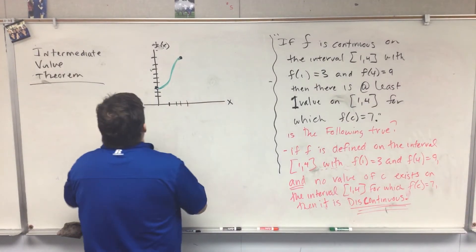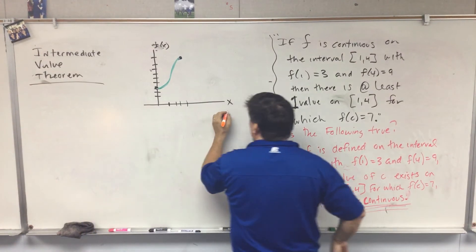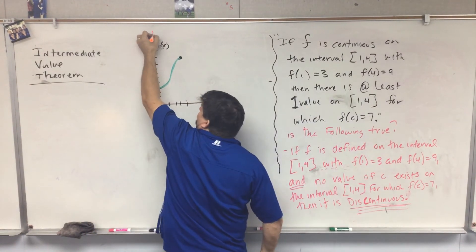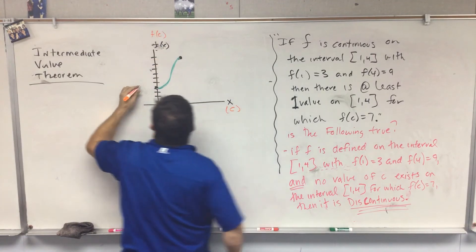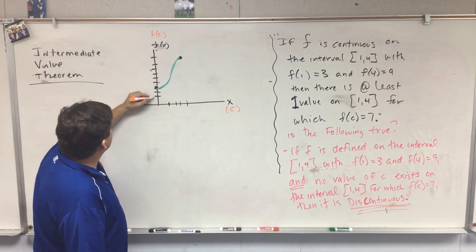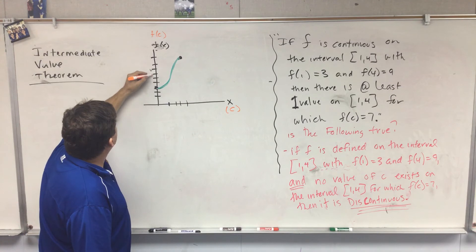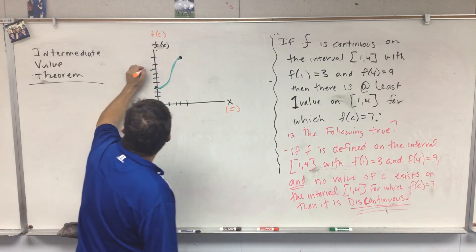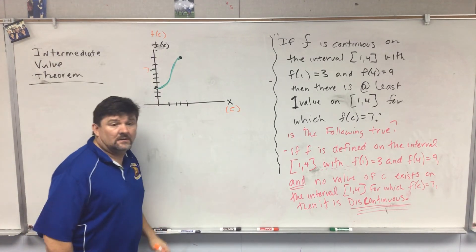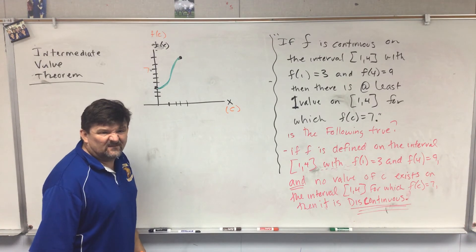At least one value on 1 to 4 for which f(c) equals 7. So another way to write this is c, and this is the same as f(c). So they're saying f(c) equals 7. 1, 2, 3, 4, 6, 7.